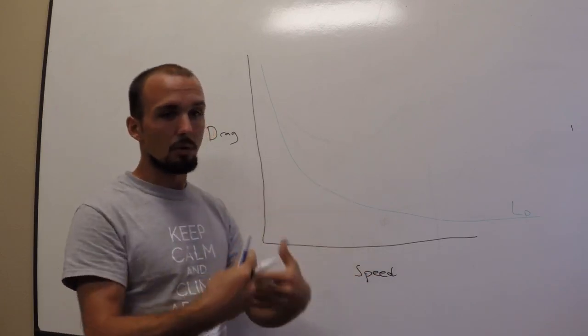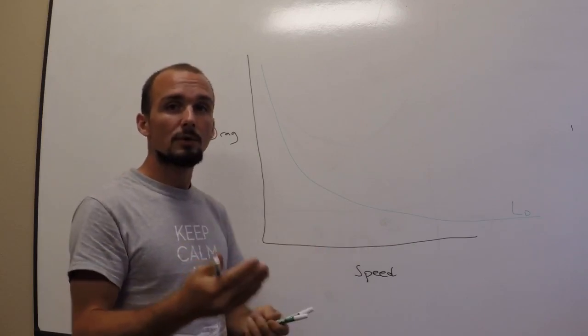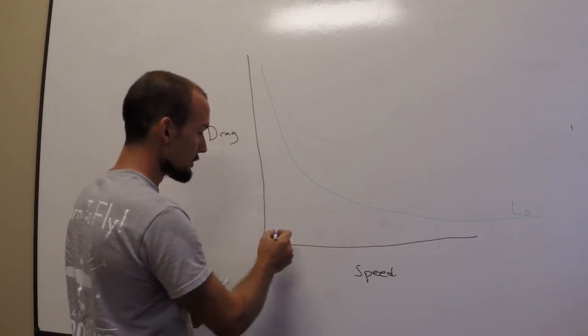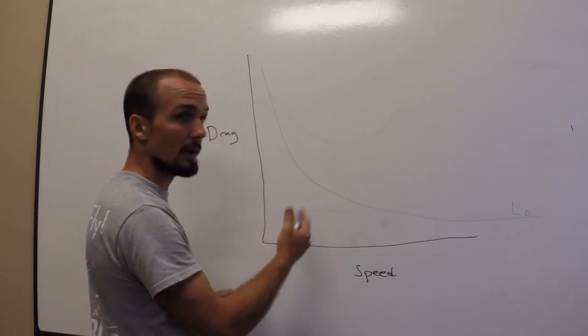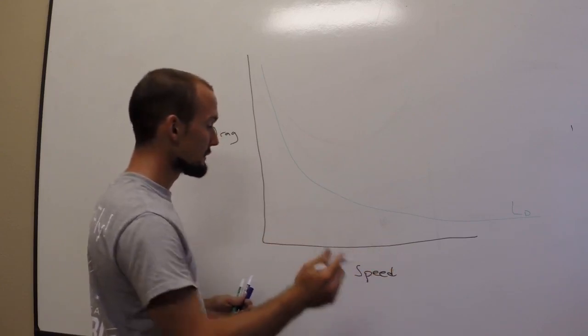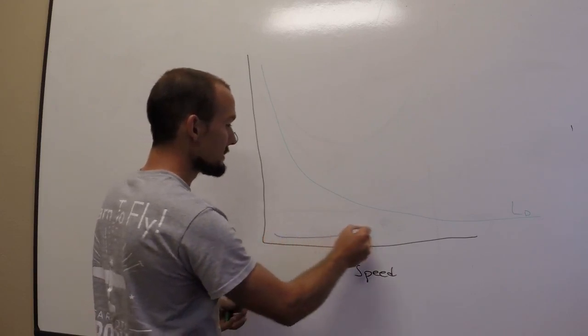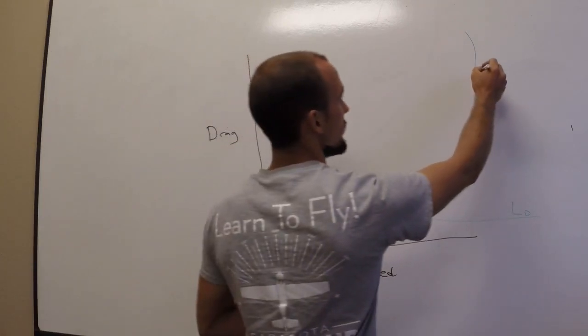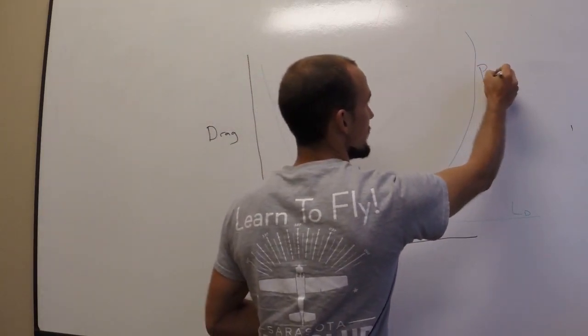That's just form drag or parasitic drag, equivalent to the landing gear on the airplane, the wheels and tires, the antennas, and just the general surface, the form of the airplane, the windshield, your wing struts. We'll call that parasitic drag or PD.